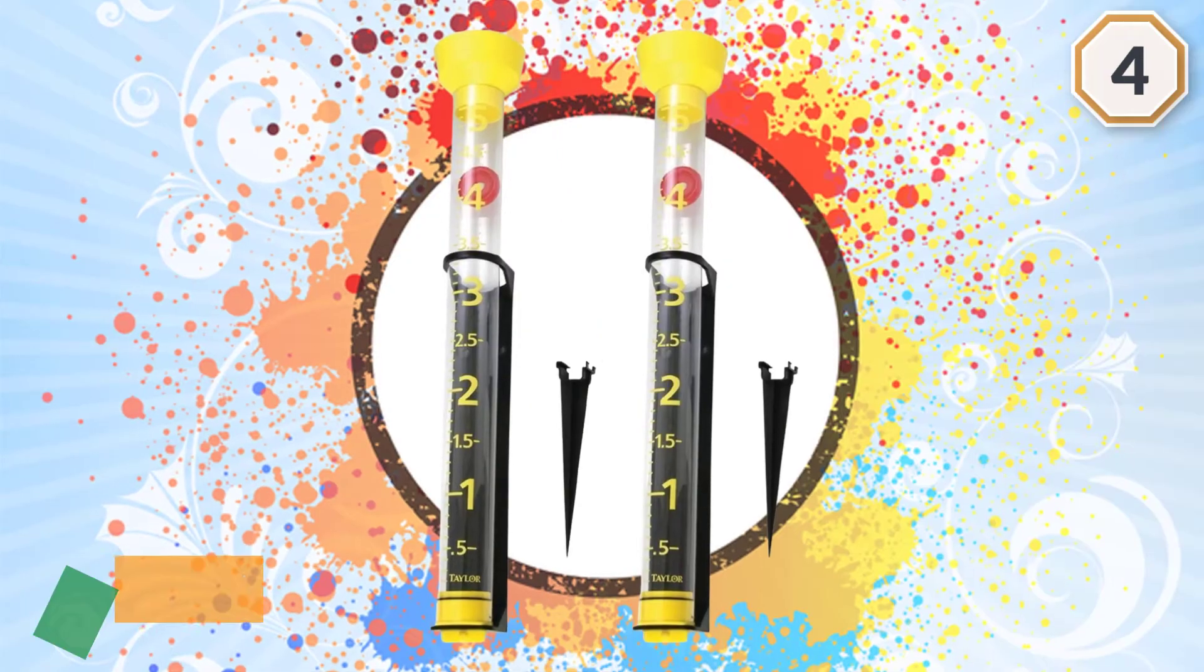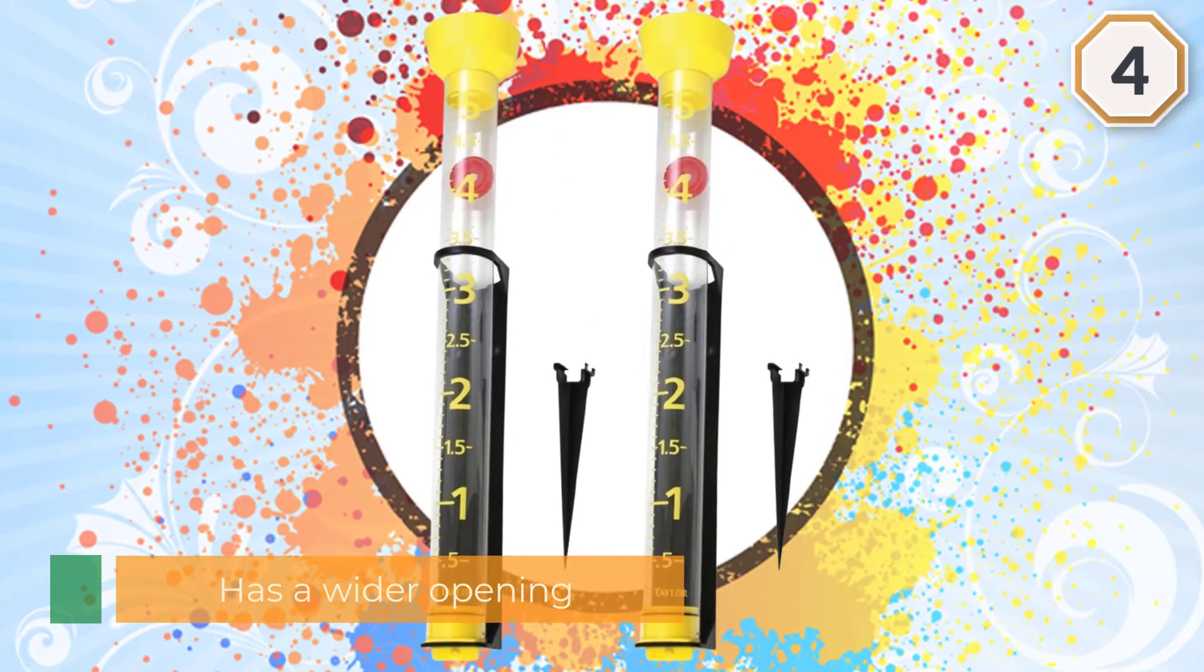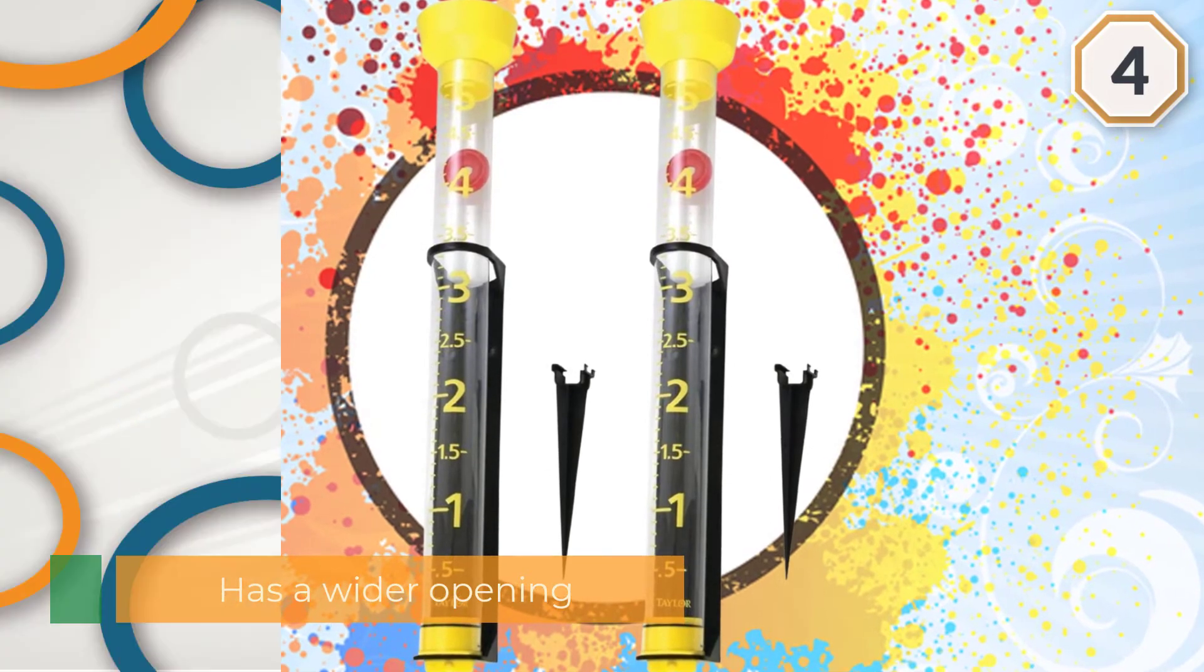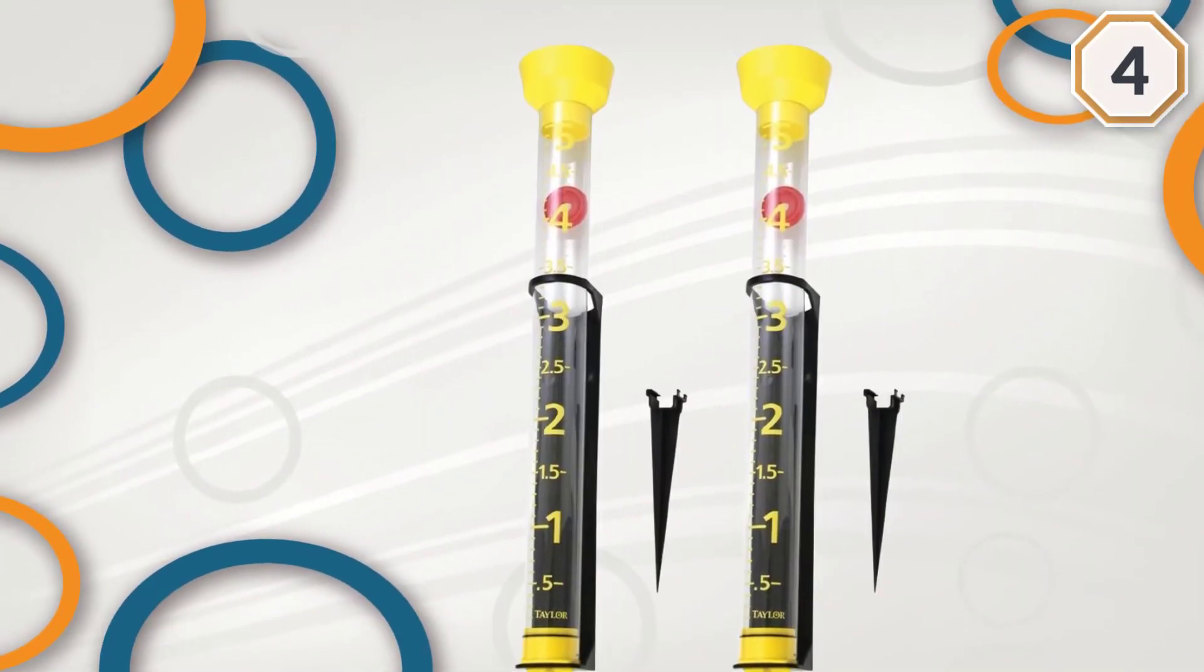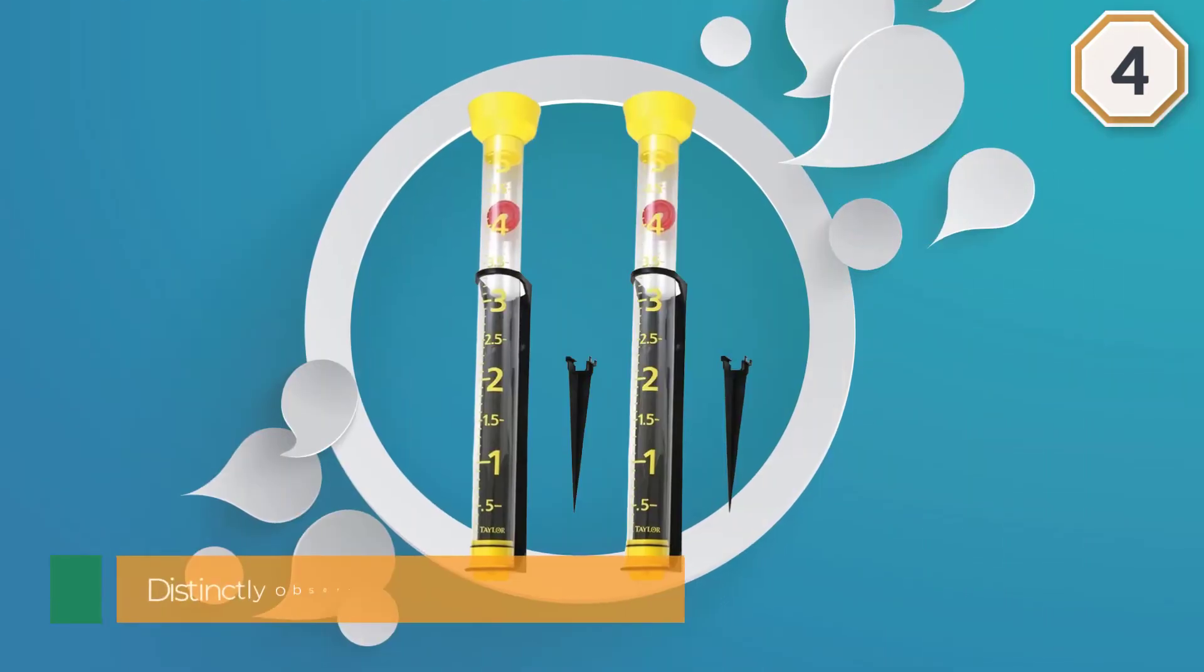It is a friend to the home gardener and a companion to the weather enthusiast as well as the professional weatherman. Accurate measurements can be clearly and distinctly observed as far as 50 feet away due to the red float, bold and clear markings, and figure imprints.